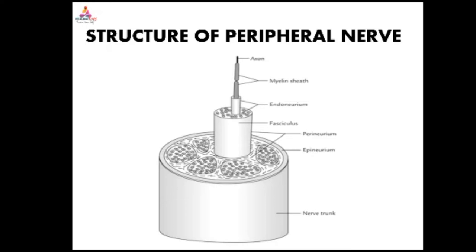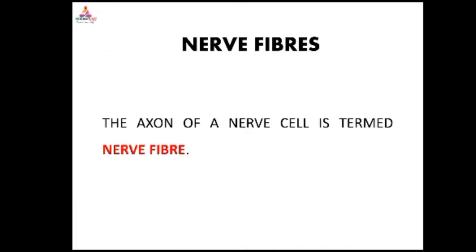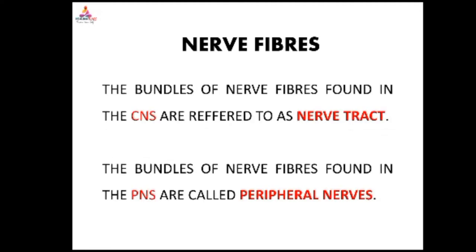The fibers within a peripheral nerve trunk derive considerable mechanical strength from these three layers of connective tissue. The axon of the nerve cell is termed a nerve fiber. Bundles of nerve fibers found in the CNS are referred to as nerve tracts, while those in the peripheral nervous system are called peripheral nerves.